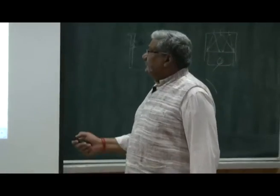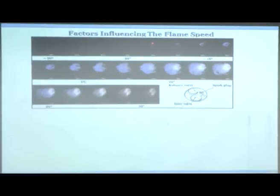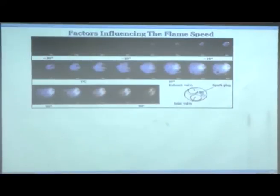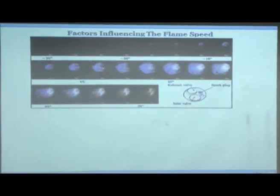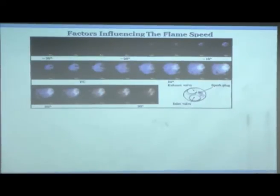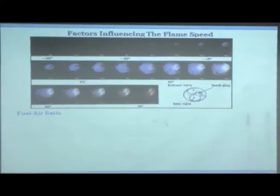The spark is applied at approximately minus 30 degrees before TDC. Nothing is visible until about minus 20, then something begins to appear and it starts growing. By the time you reach TDC, almost two-thirds of the combustion chamber bore is occupied by flames. It keeps growing and by about 18–20 degrees it is at its peak, and after 30 degrees it starts diminishing. So from minus 15 to plus 30 degrees, combustion in an SI engine is over.